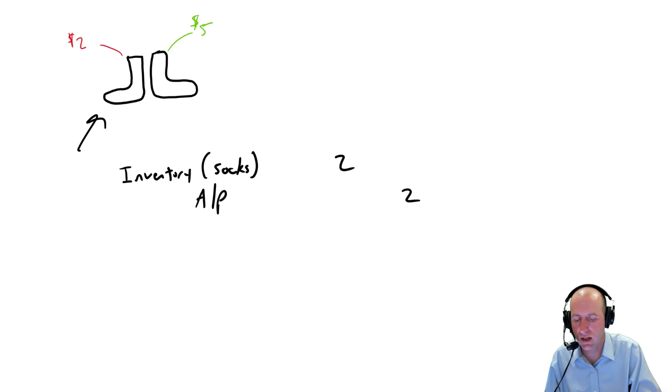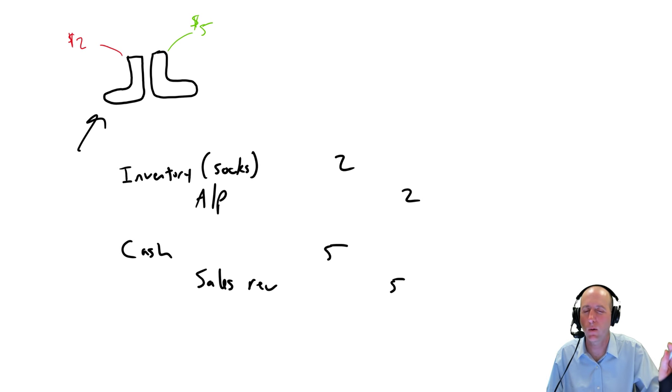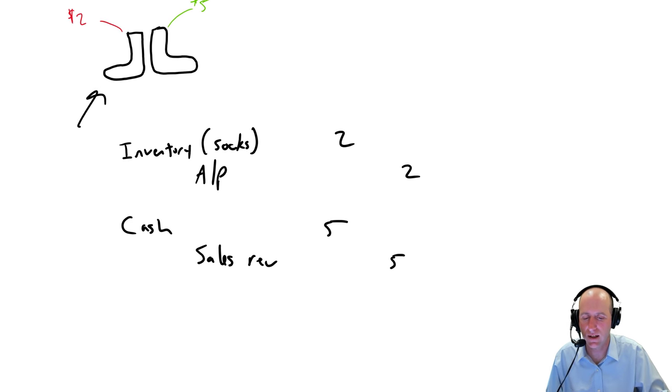And then we turn around, and the next day we sell the socks. So our customer comes in and they buy the socks. Their customer pays us cash, $5. There's sales revenue of $5. We're not worrying about any discounts or anything like that. And of course, there's two pieces to this entry. One, to record the money coming into the till, the $5 amount.